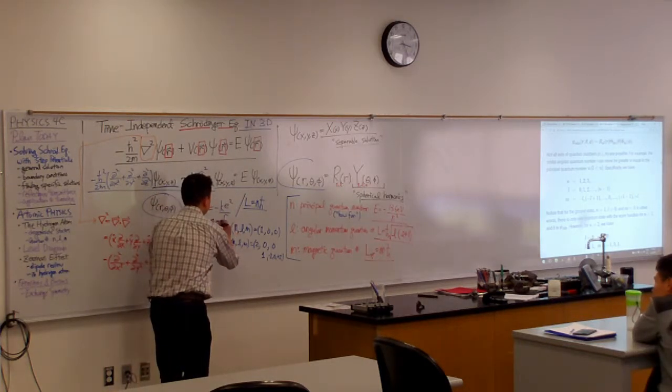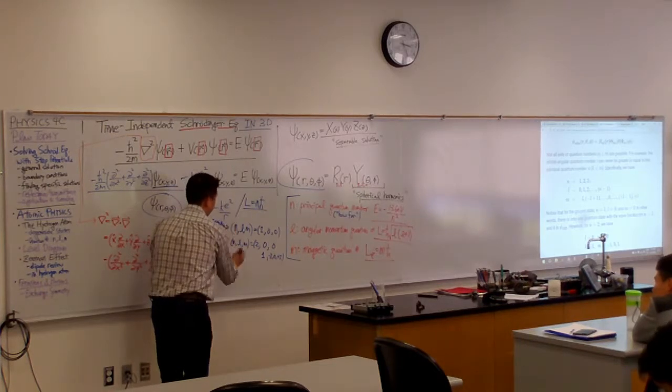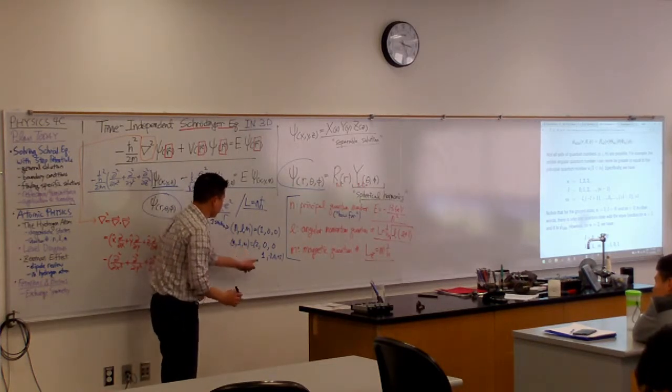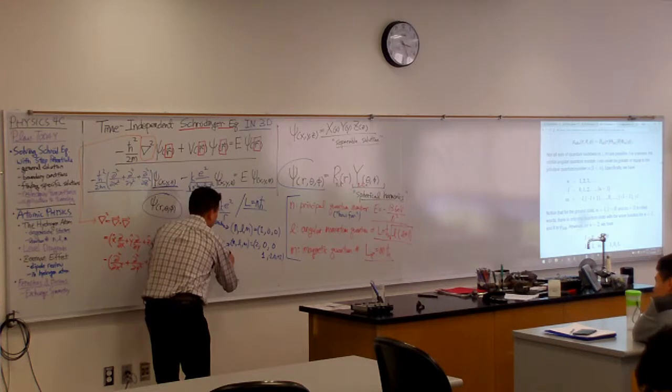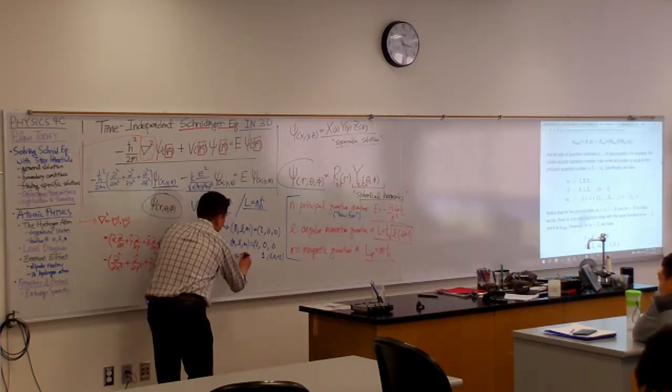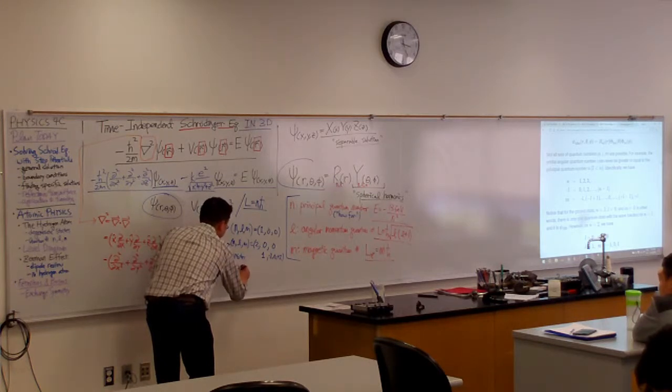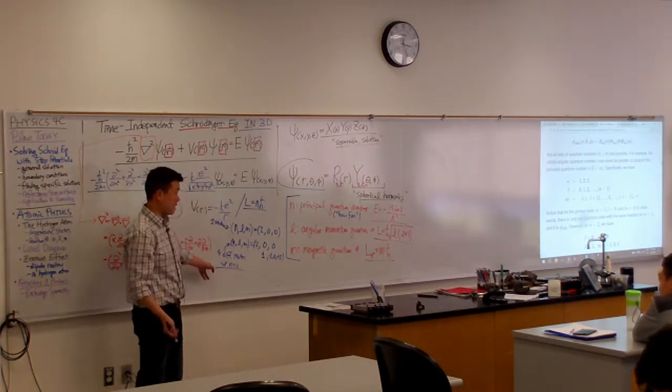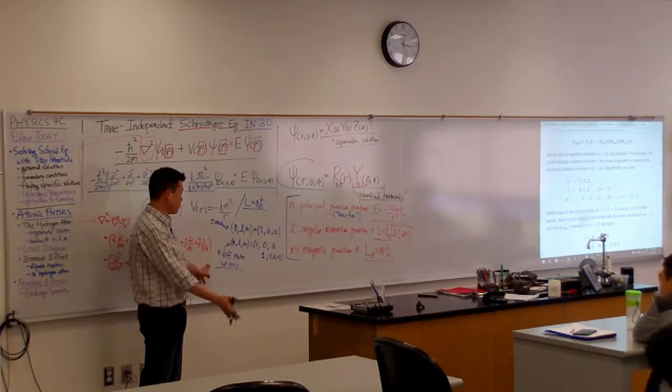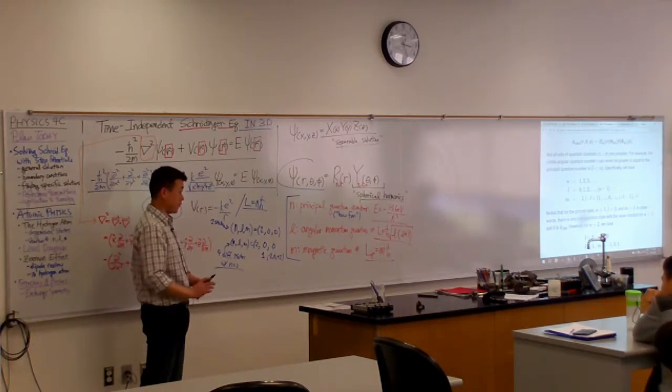And here, starting with N equals two, you can have four different states with N equals two. And for each of those states, we can imagine measuring the energy of the electron.